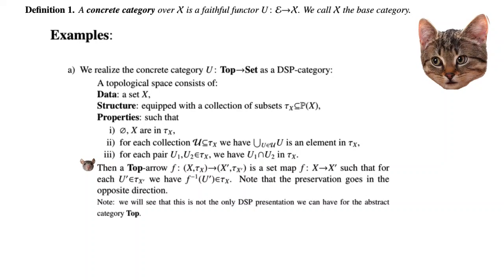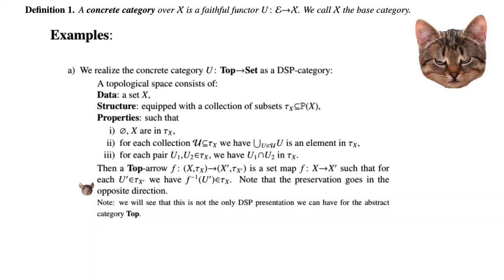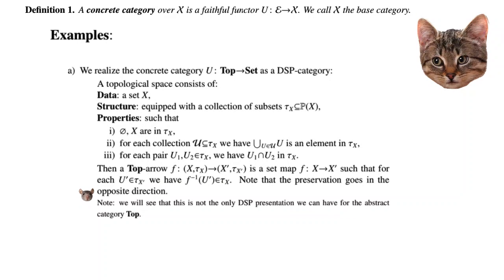A Top-arrow, usually called a continuous map, is a set map such that for each open set, its inverse image is also an open set. Note that this preservation of structure goes in the opposite direction, and we will try to explain why it might be nice to flip these arrows around when we talk about frames and locales. There are also other ways of giving a DSP presentation for the abstract category of topological spaces, and we will talk more about this when we discuss concrete functors and concrete equivalences.